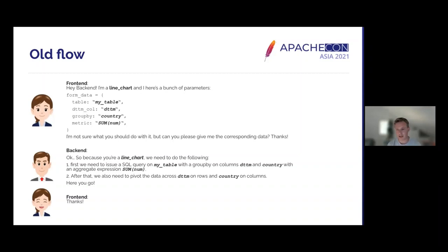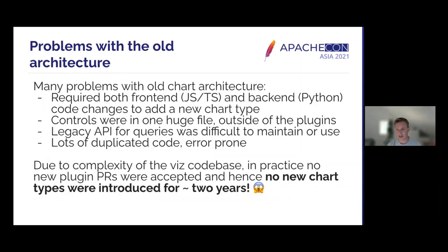The backend received those requests and had a lookup table that knew exactly what to do, then sent the response back. The problem with this architecture was that it required both front-end and back-end work every single time you added a new visualization type. You had to write the visualization plugin itself, but also add backend code to translate the request into an actual response. Over time, all of this transformation logic was dumped into one file in the backend, which made it very difficult to maintain. There was also a lot of duplicated code.